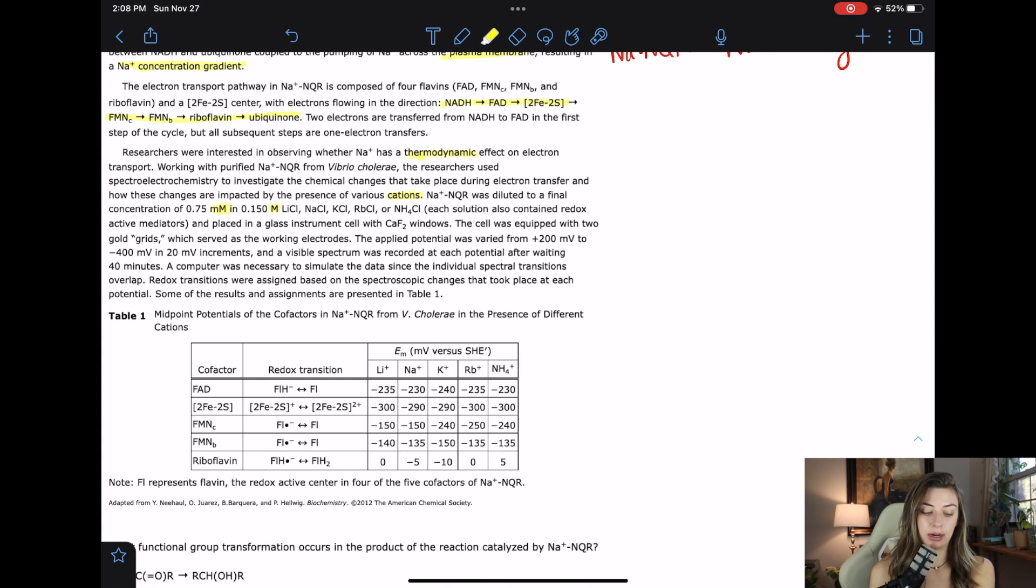I love when they mention ions because a lot of times they ask easy questions about them. So now we are adding cations into the mix and seeing if that changes how this enzyme works. Sodium NQR was diluted to a final concentration of 0.75 millimolar in 0.15 molar lithium chloride, sodium chloride, potassium chloride, rubidium chloride, or ammonium chloride. Each solution also contained redox active mediators.